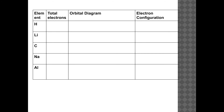Let's write electron configurations. For hydrogen, which has one total electron: we always start on the first floor in the first room — the 1s. We place one arrow in that box. The electron configuration is written as 1s superscript 1, where the superscript 1 represents one electron in the 1s orbital.